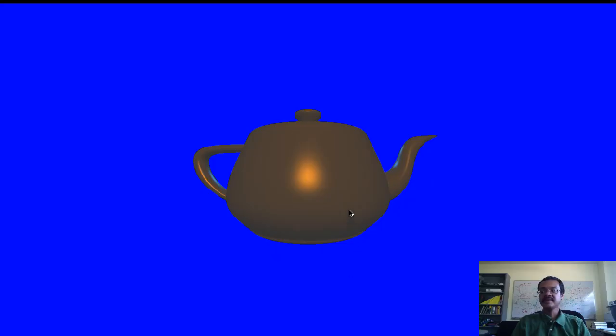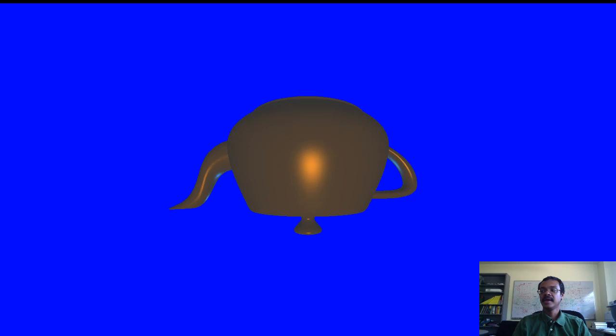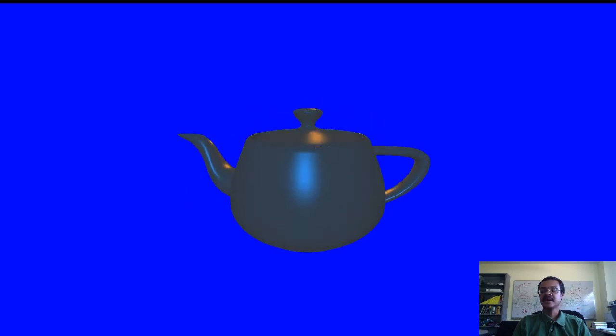So here I have my teapot, and what I can do is I can move, rotate around it, and I can rotate the viewer to see it from many different directions. I can also change the viewer in this way and rotate around the teapot.